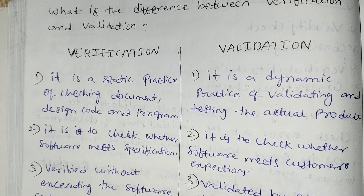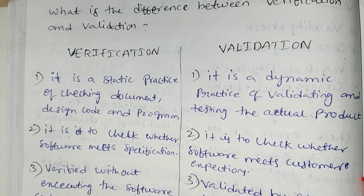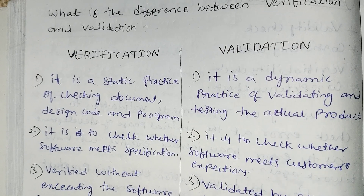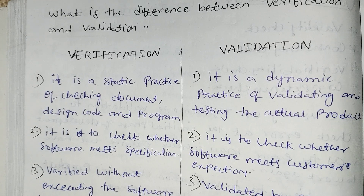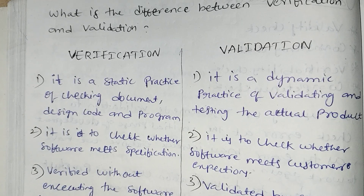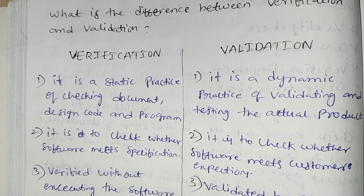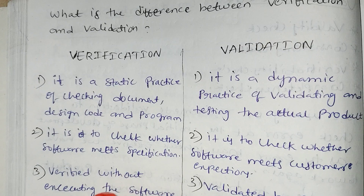Validation is to check whether the software meets customer expectations. The specification is part of verification, while the customer expectation is what we call validation.